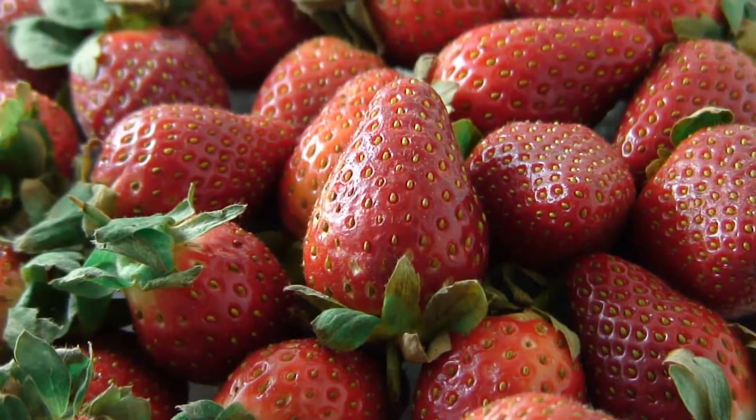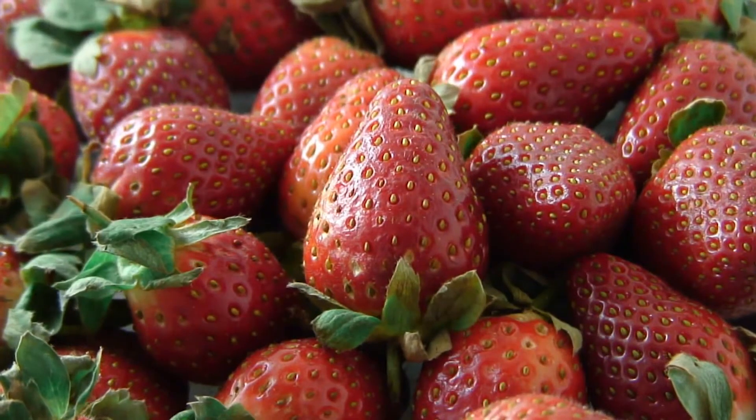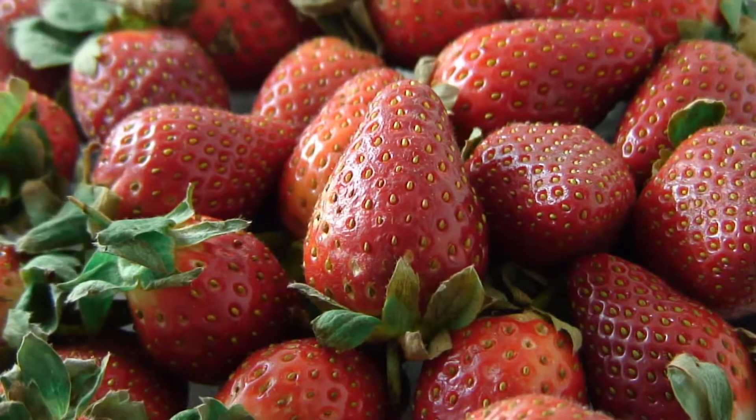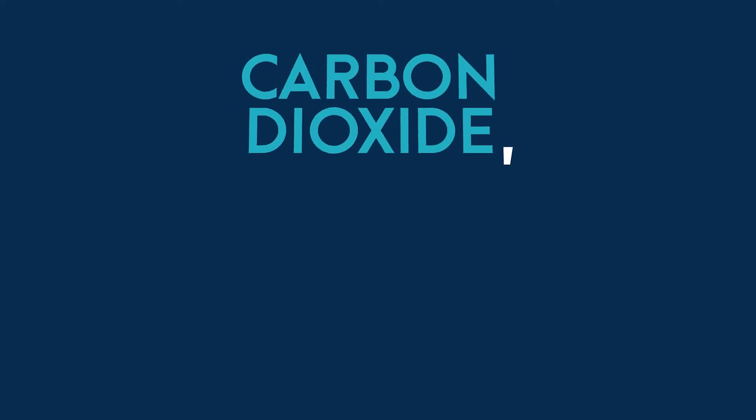To answer that, let's take a look at strawberries. The sugar inside strawberries likes to react with oxygen in the air because that reaction results in less ordered products — carbon dioxide, water, and heat — increasing entropy. It also results in a lower energy level.